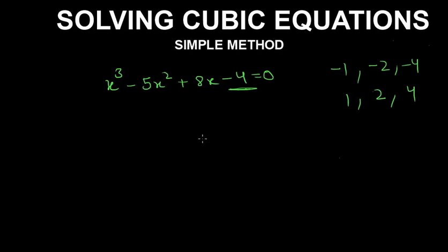Now let us put 1 in this equation. If we put 1 here we get 1 minus 5 plus 8 minus 4. Minus 5 minus 4 is minus 9, and 8 plus 1 is 9, so it is 0. So we got a root of this equation which is 1. x equals 1, or we can write it as x minus 1 equals 0.